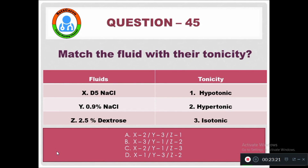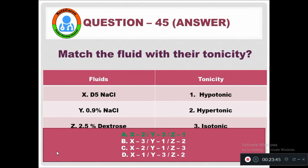Question 45: Match the following fluids with their tonicity. X: Dextrose 5% in NaCl — hypotonic solution. Y: 0.9% NaCl — isotonic solution. Z: 2.5% dextrose — hypotonic solution. This is how each fluid is matched to its tonicity.